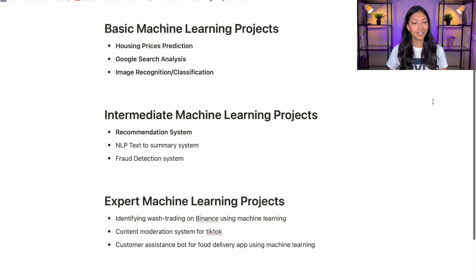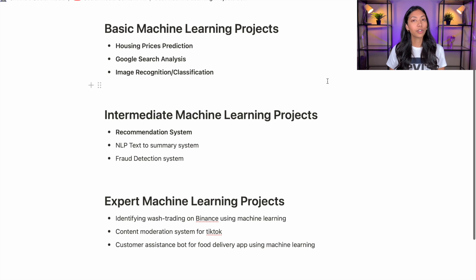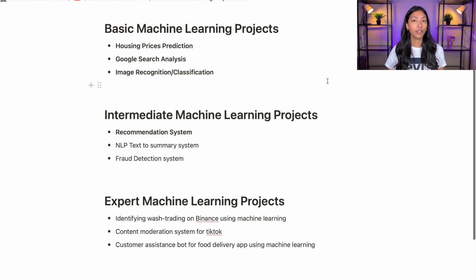For basic ML projects, we have the classic housing price prediction — a great basic level project to start with if you're a beginner. The second is Google search analysis, where you can pick a specific topic to search within Google Trends, and being slightly more specific can definitely help. The third is image recognition or classification, including classic datasets like MNIST, where you have pictures of numbers and you create a machine learning algorithm that identifies which number is in each picture. These are all great ideas for basic machine learning projects.